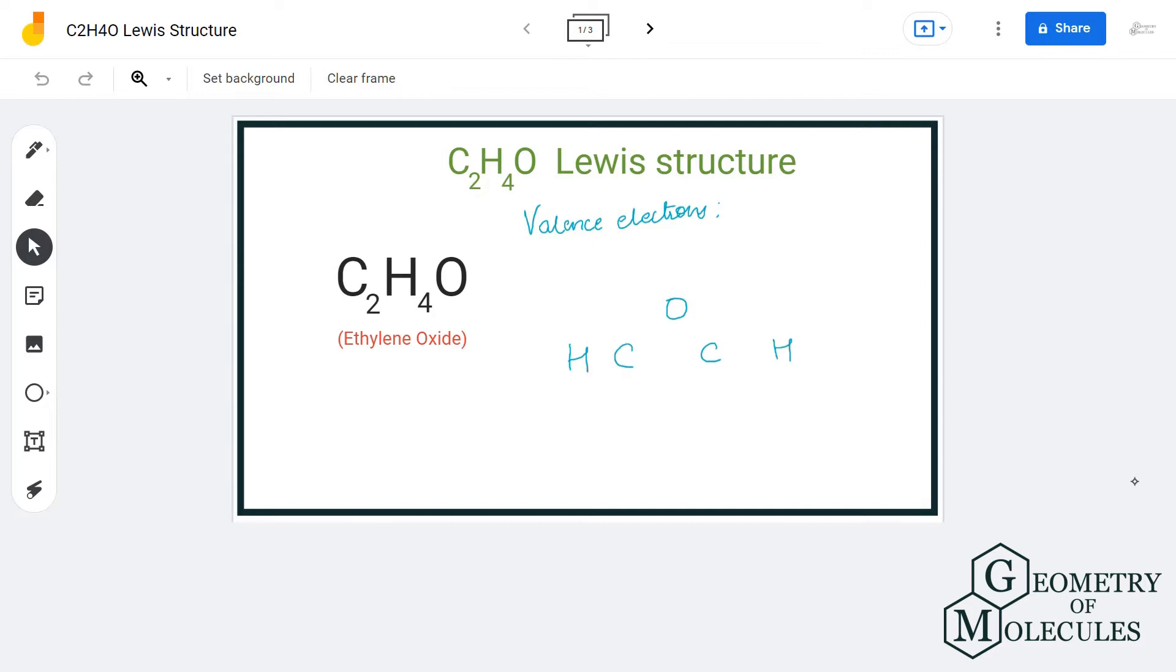Hi guys, welcome back to our channel. In today's video we are going to do ethylene oxide Lewis structure. It has a chemical formula of C2H4O, and to determine its Lewis structure we will first look at the total number of valence electrons for this molecule.